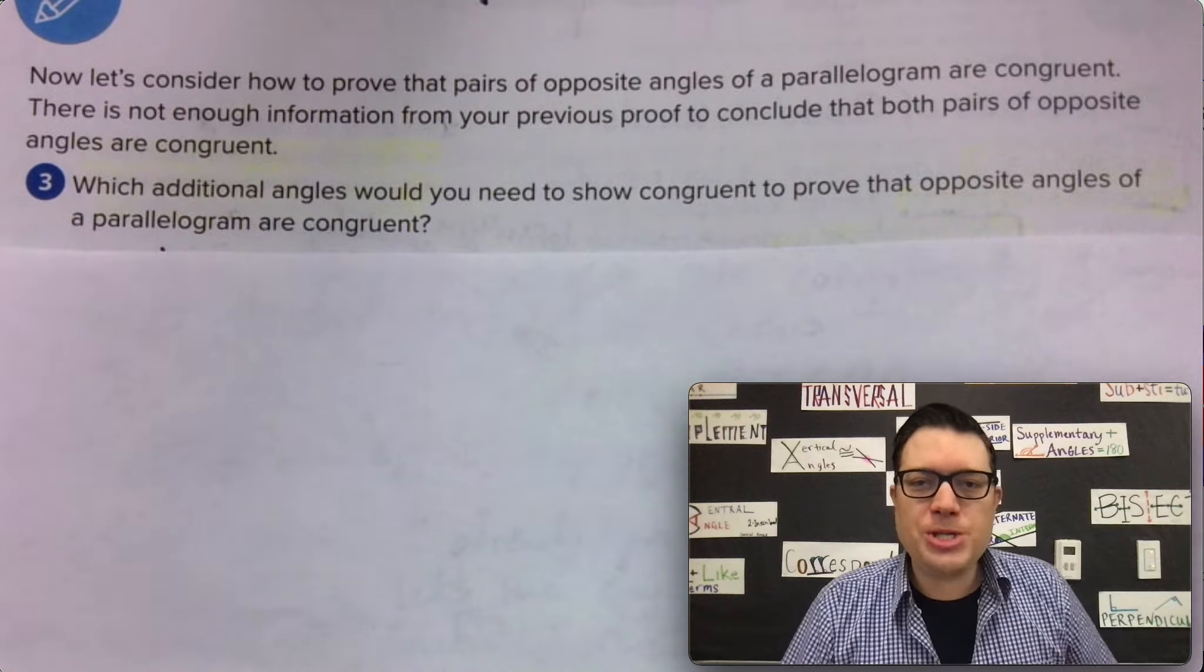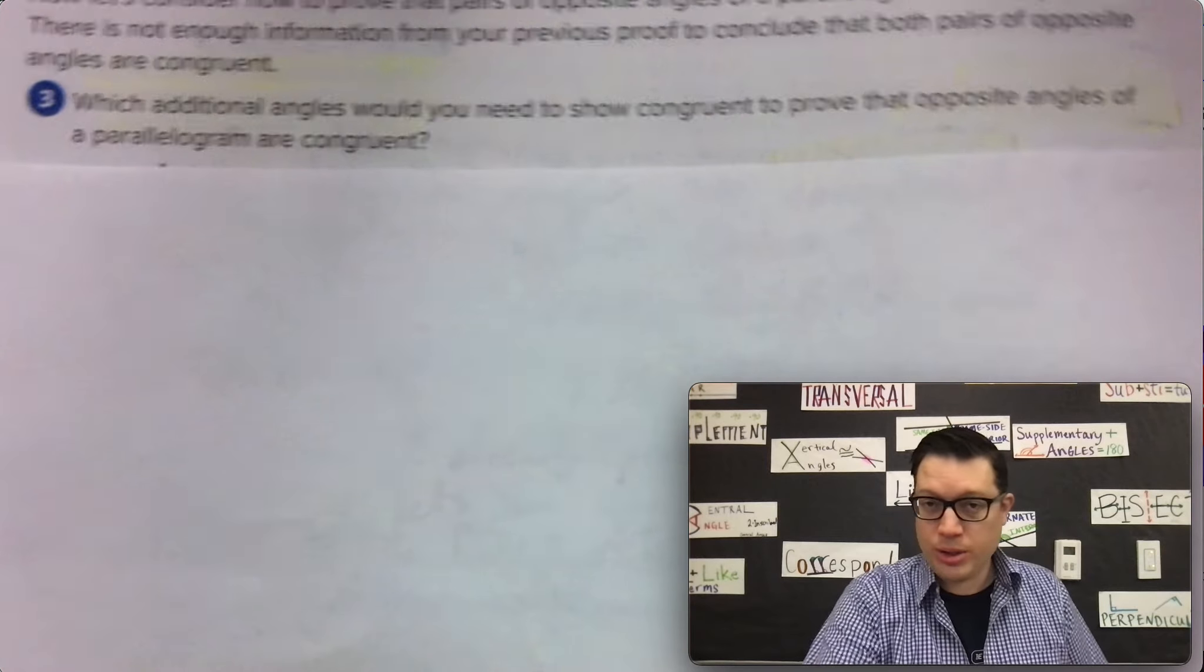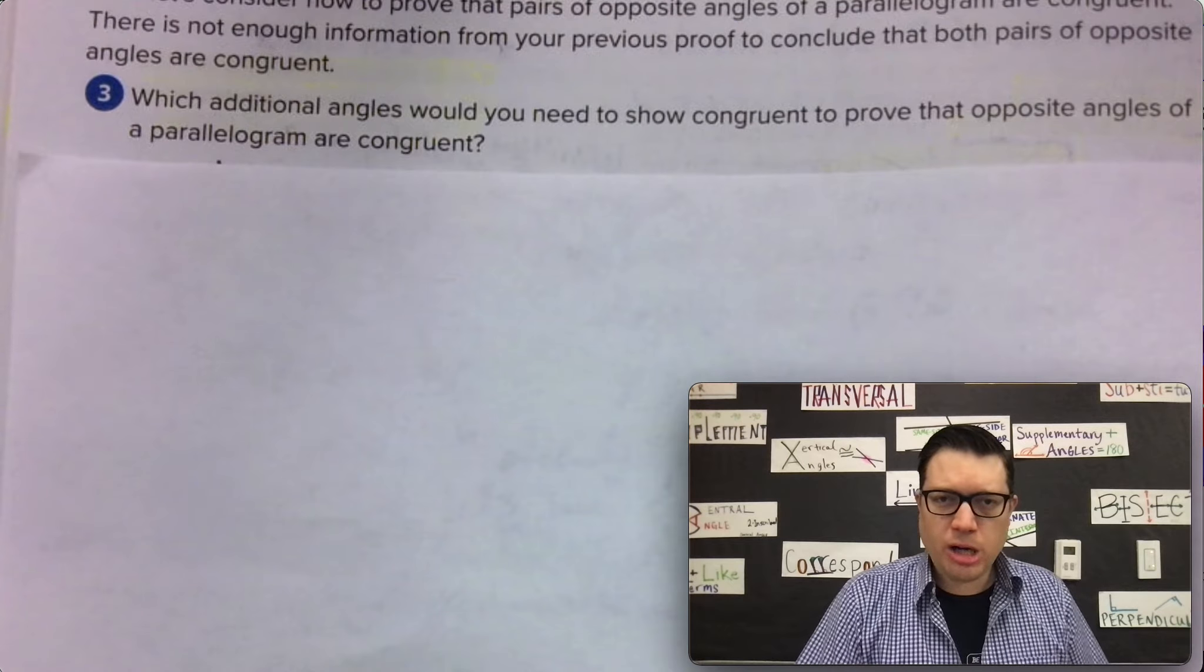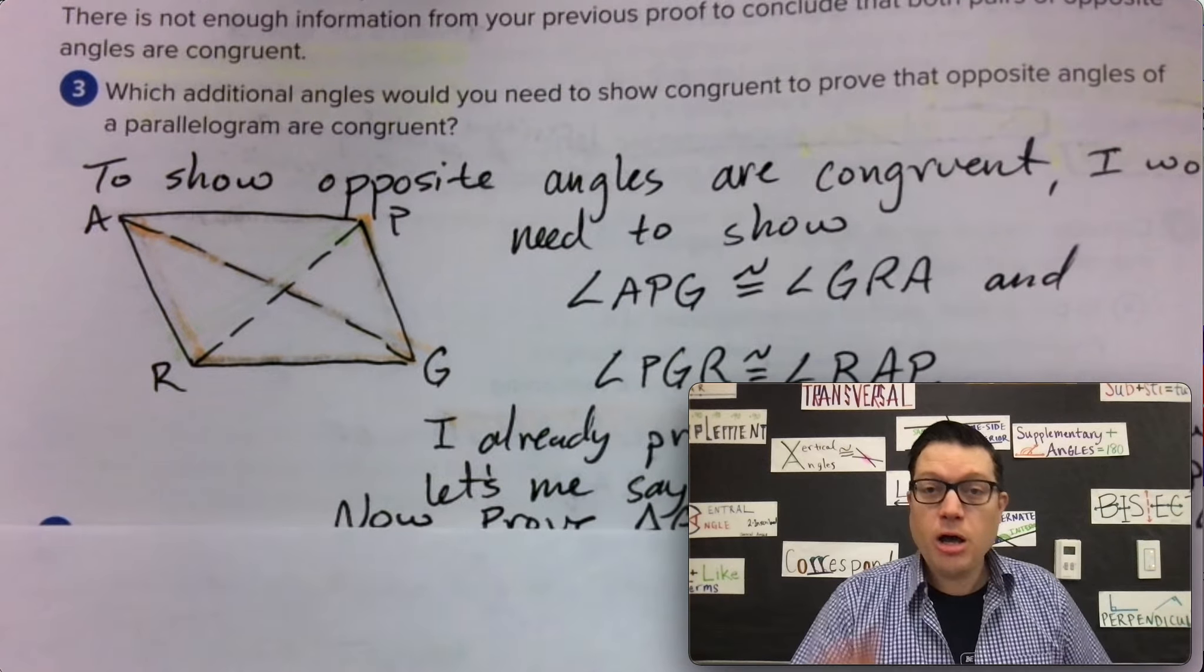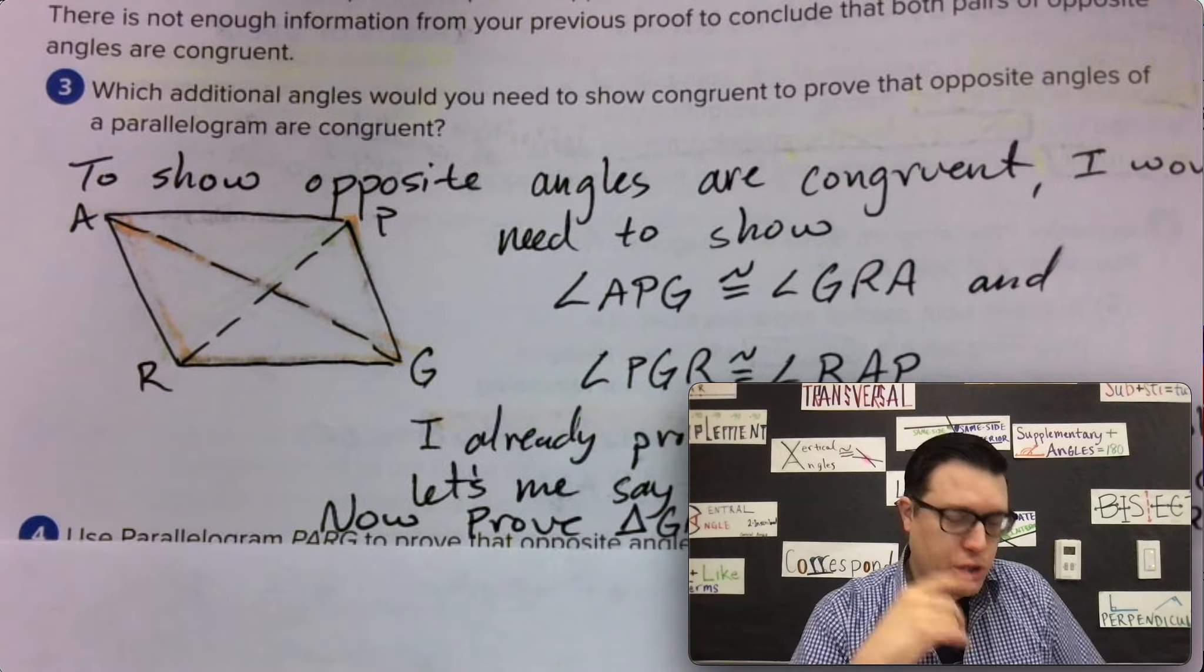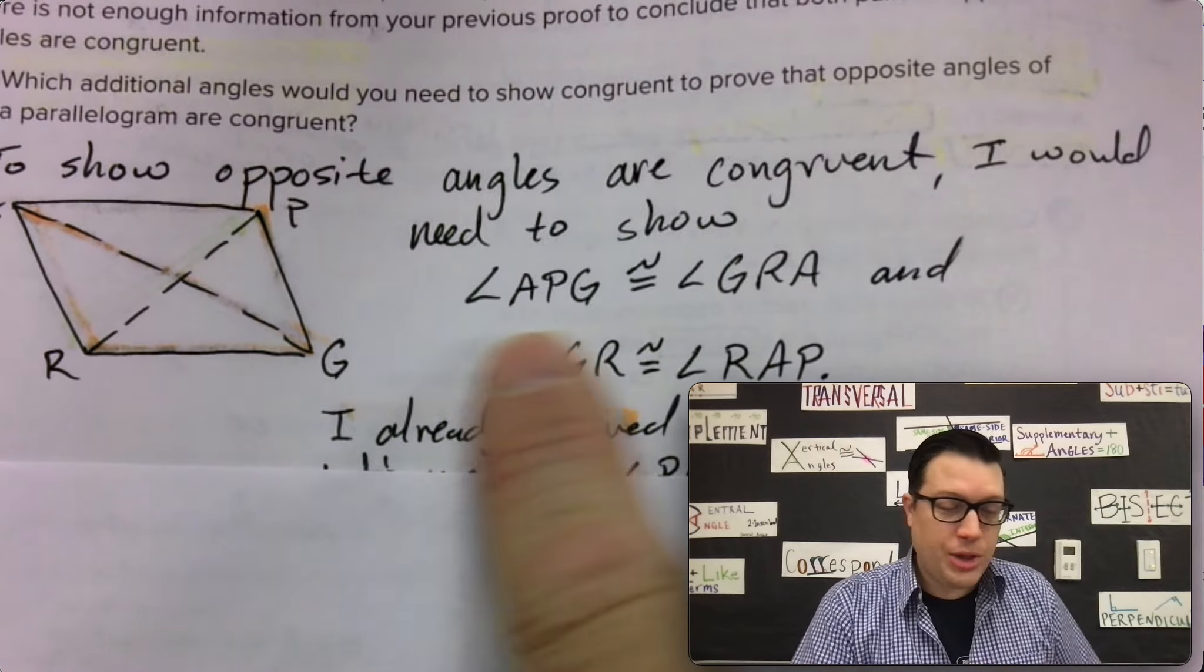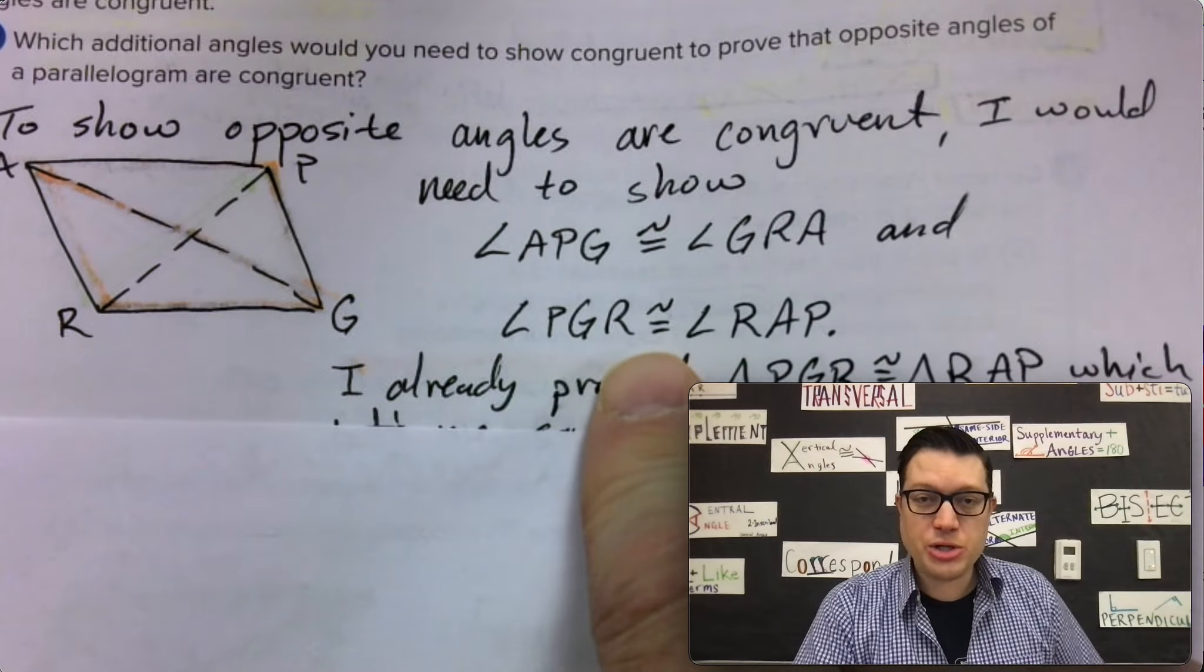Which additional angles do you need to show congruent to prove that opposite angles of a parallelogram are congruent? Well, I mean what parallelogram are we talking about? I guess we're still talking about PARG. Of course, stop the video at any time and scan and write. But to show that opposite angles are congruent, I would need to show these are the angles that are actually the ones that are congruent.